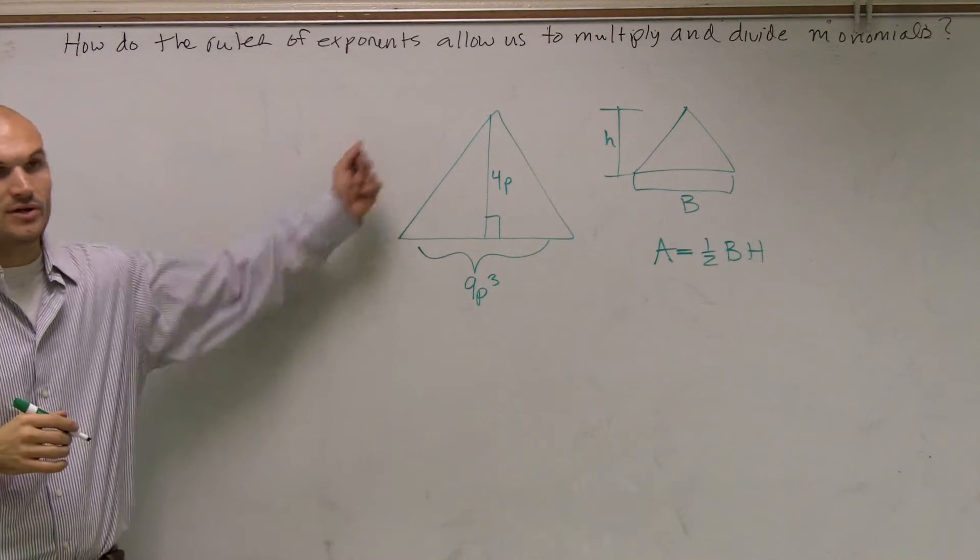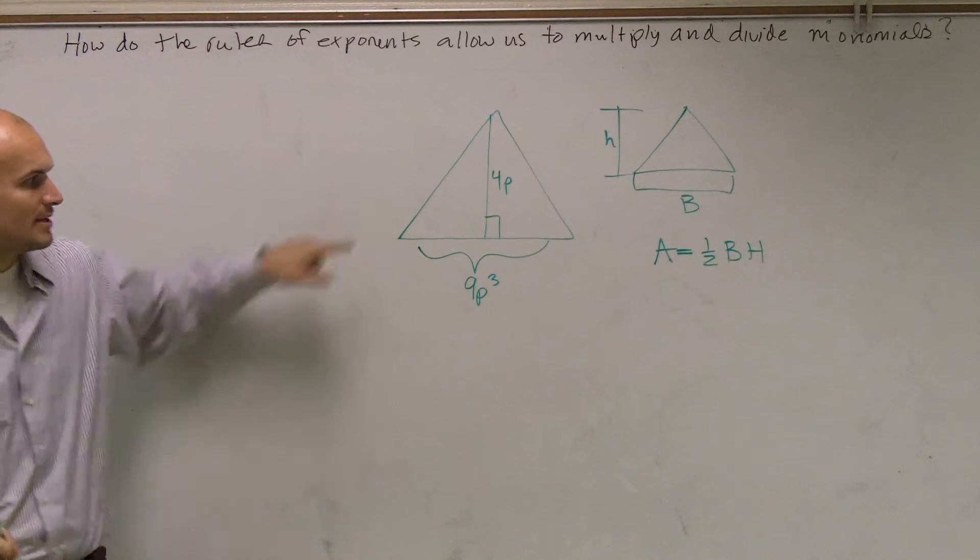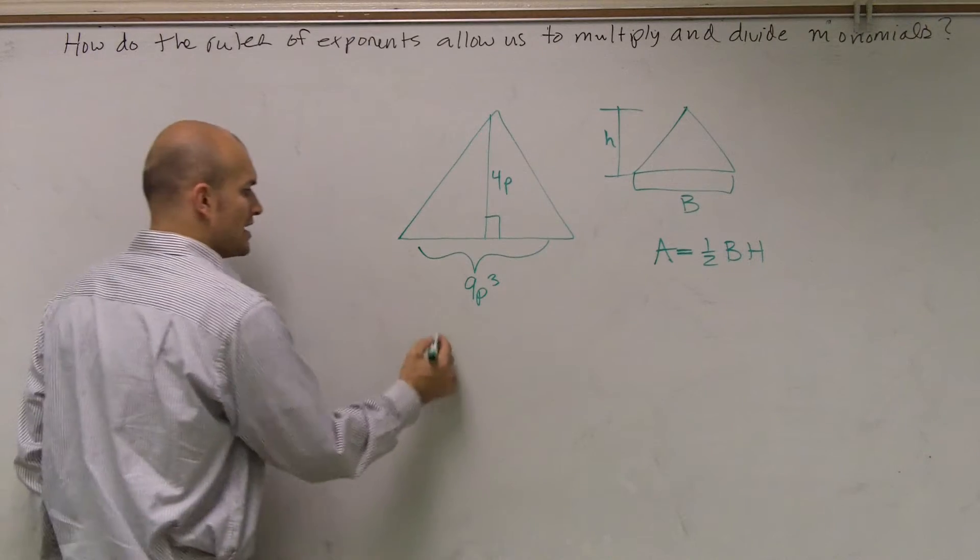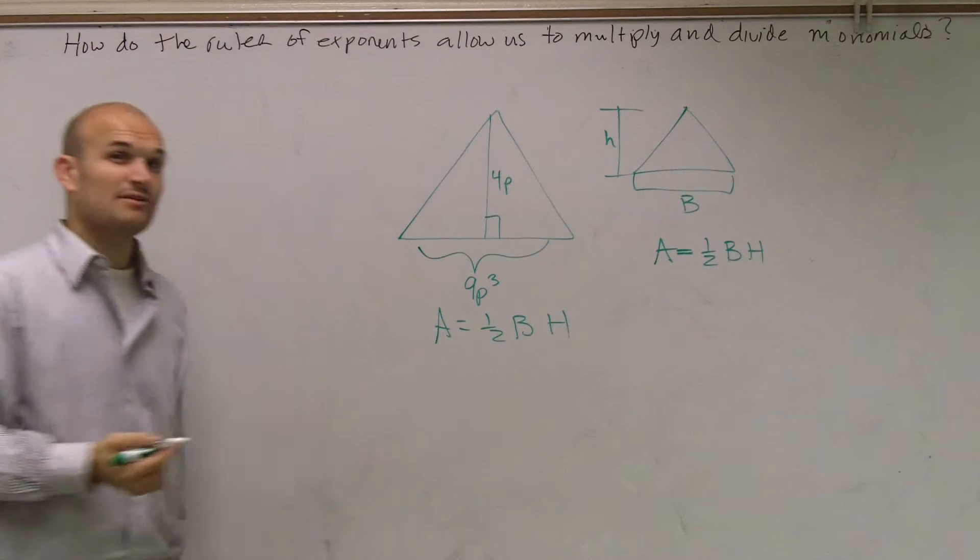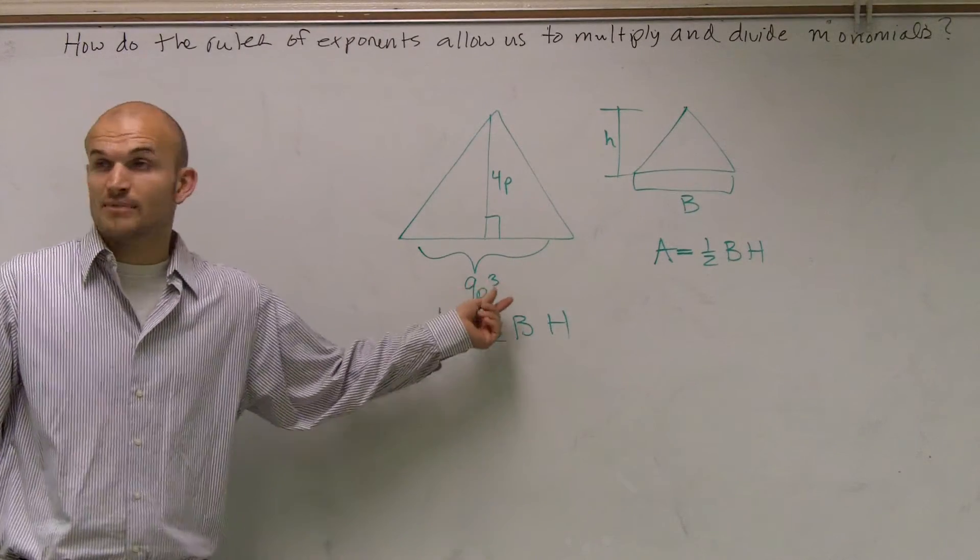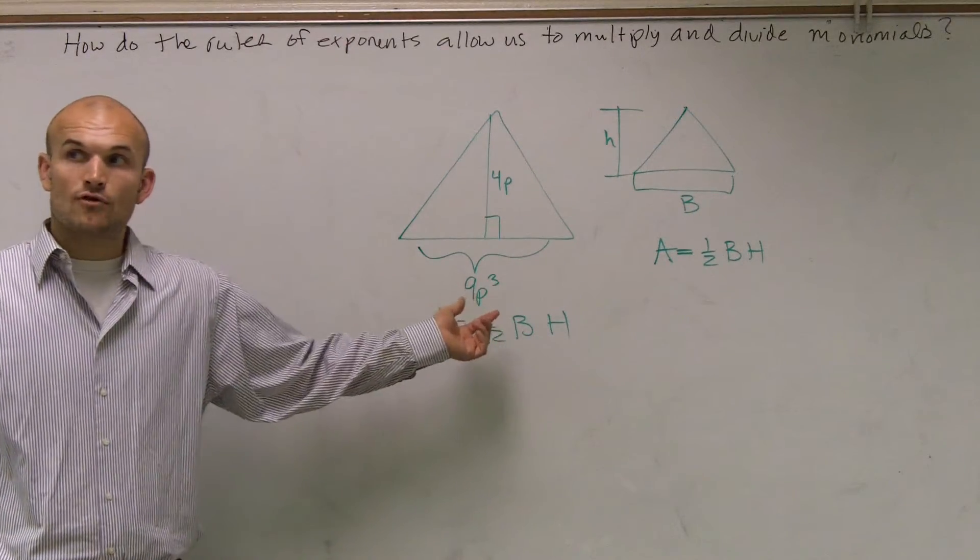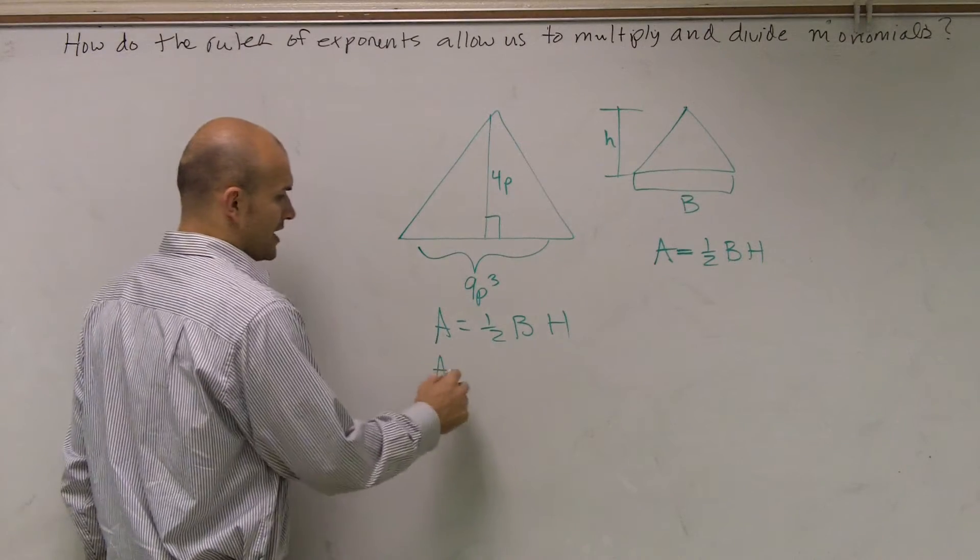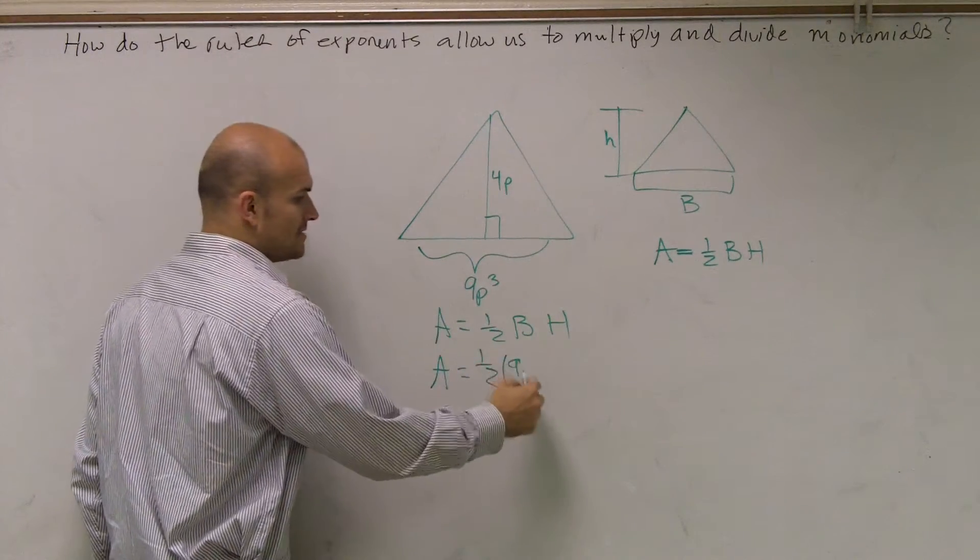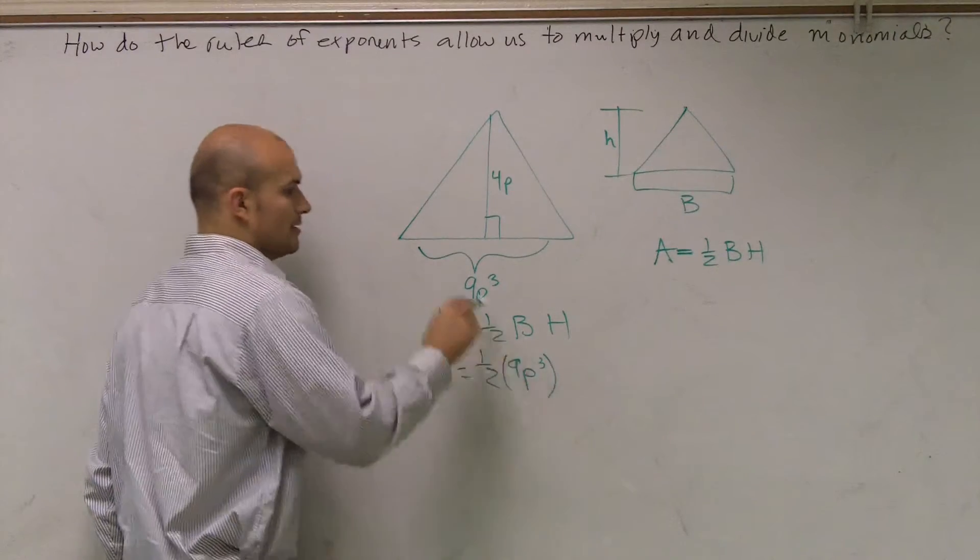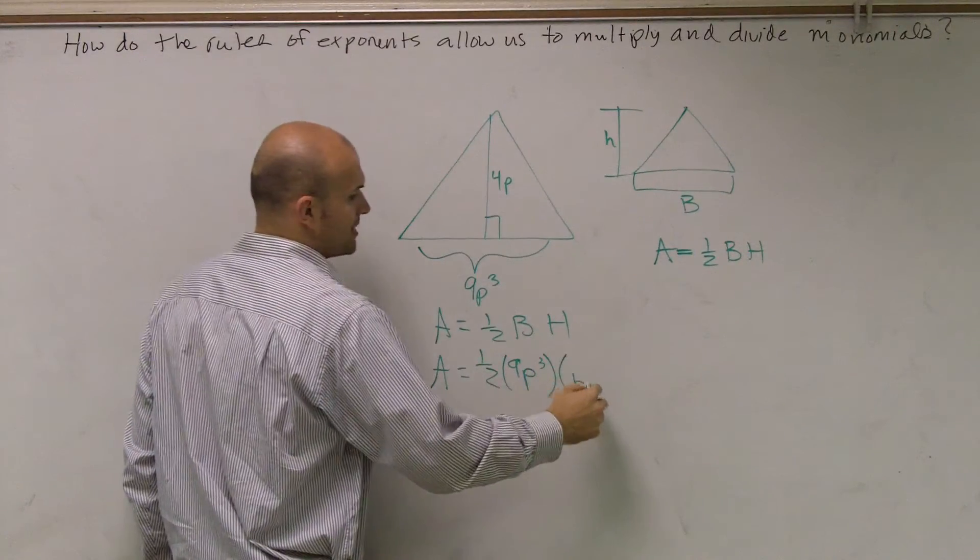Okay? So if I'm looking at this triangle, what I'm going to write is area of a triangle equals one-half base times height. Now, rather than having a number, I have a monomial, and that's going to be my expression for my base. So I have area equals one-half, the base is 9p cubed, and my height is 4p.